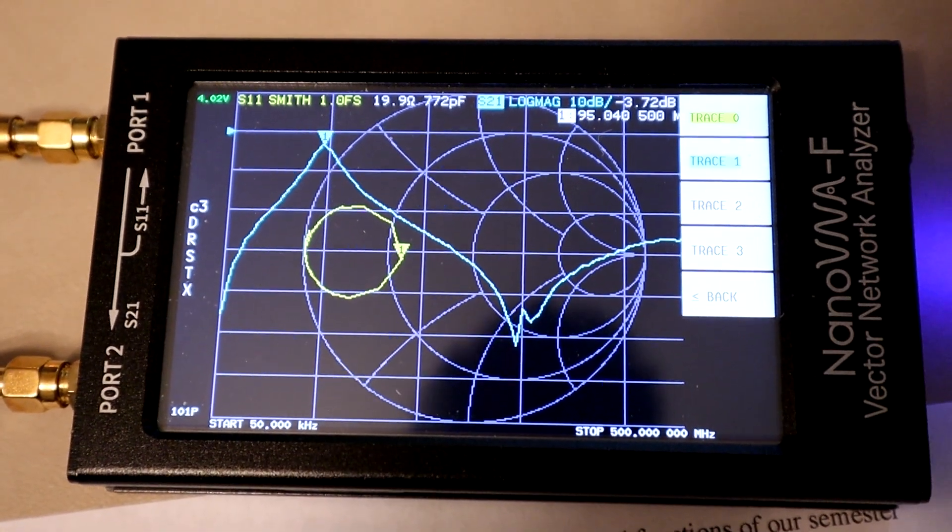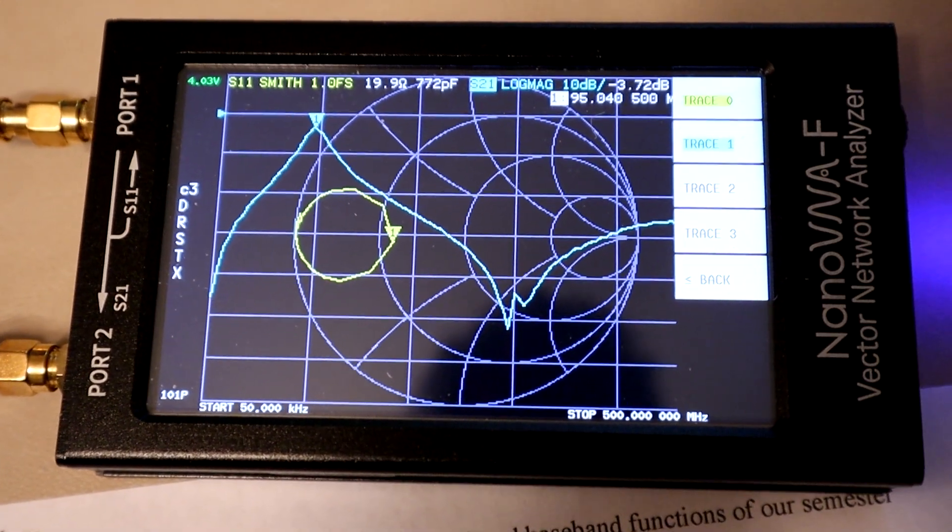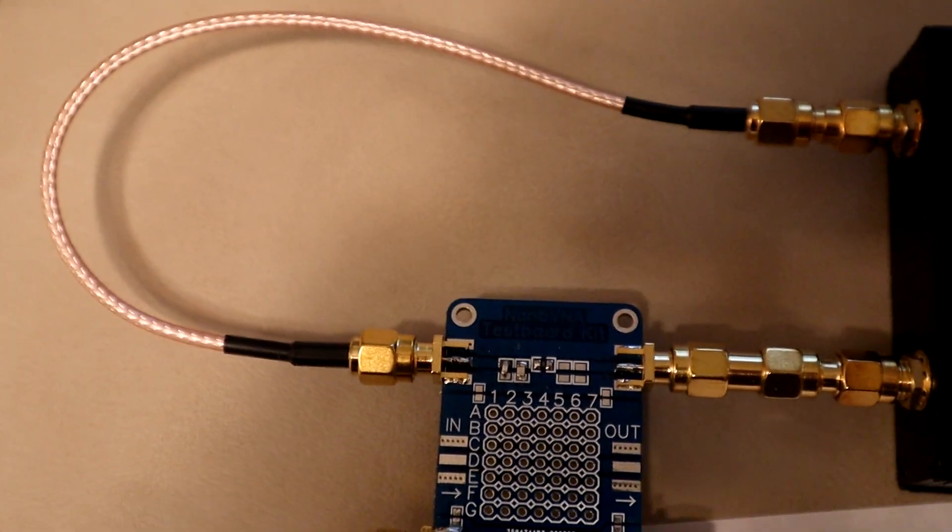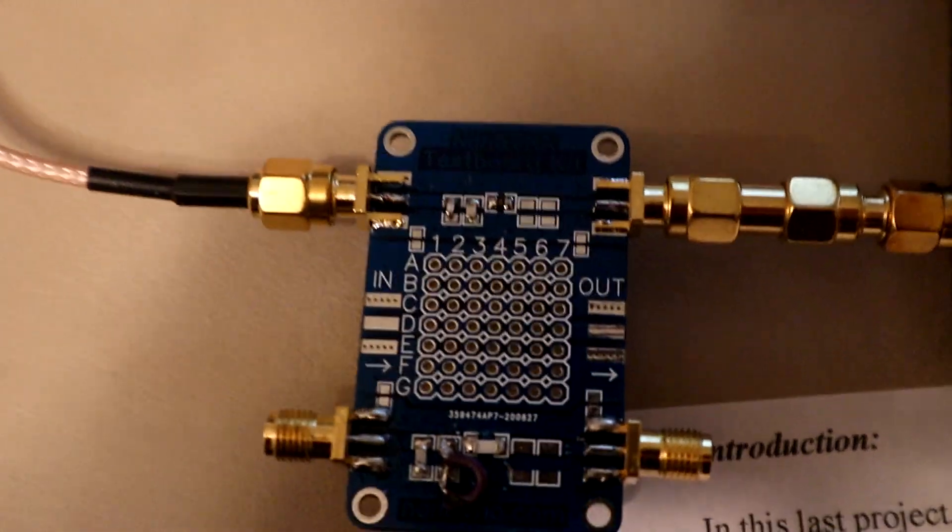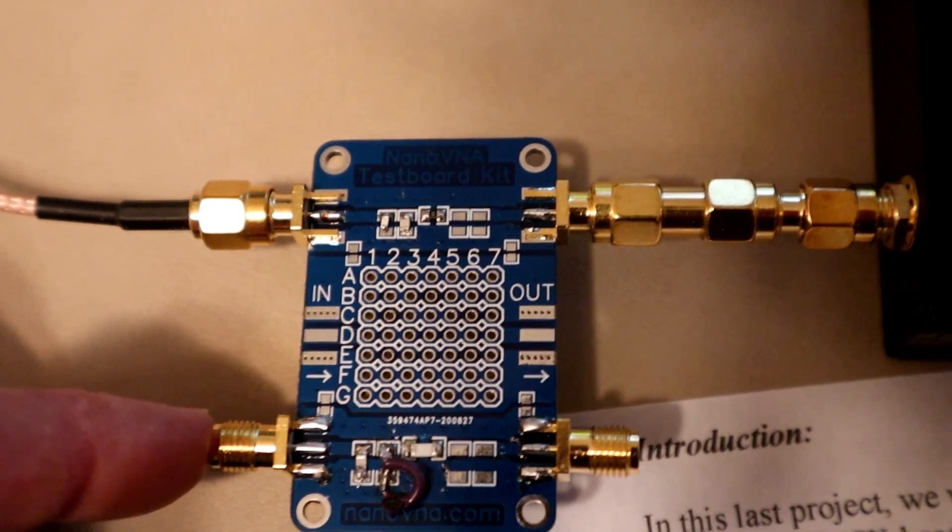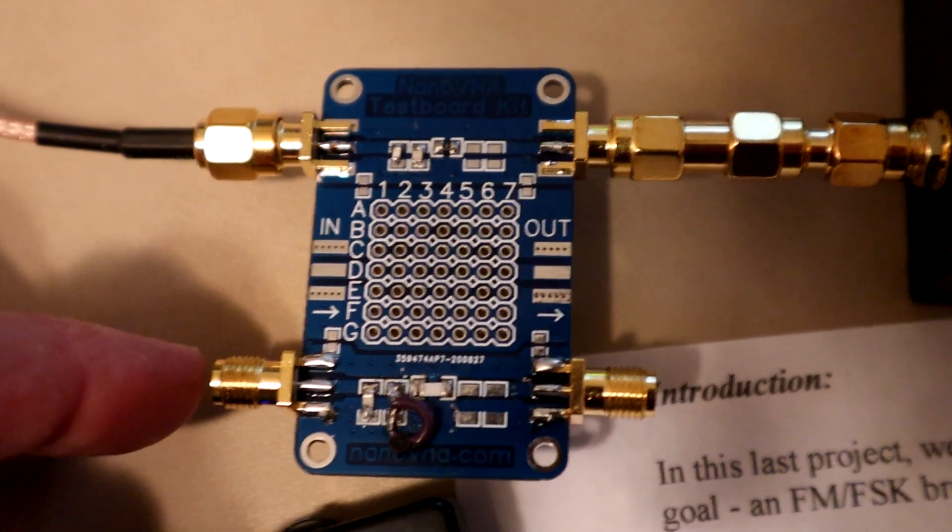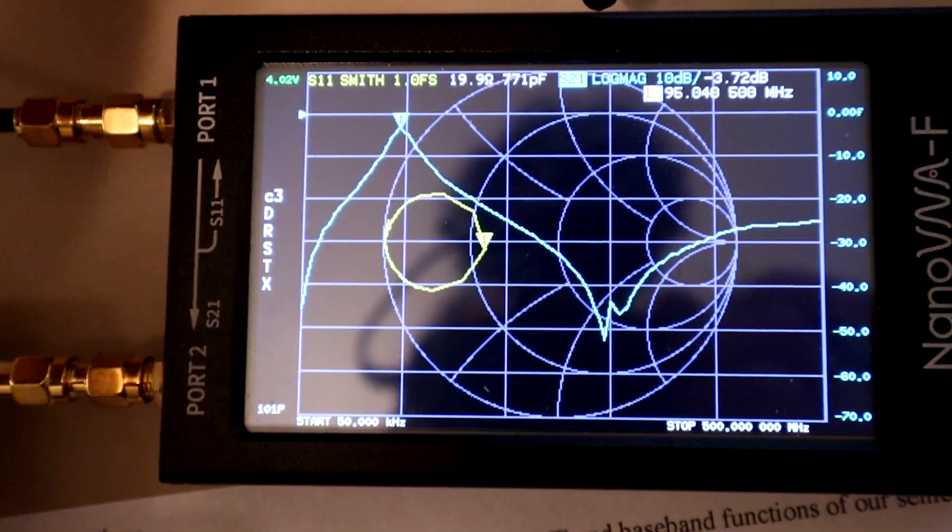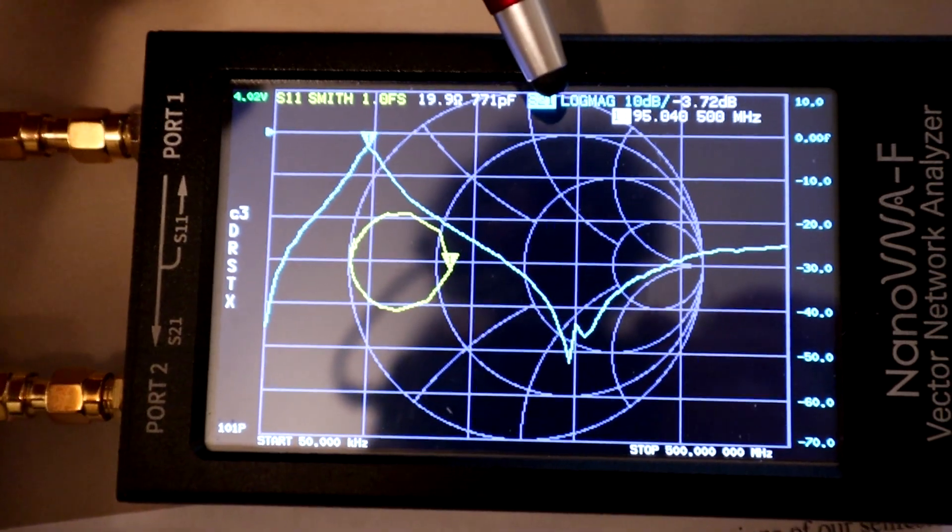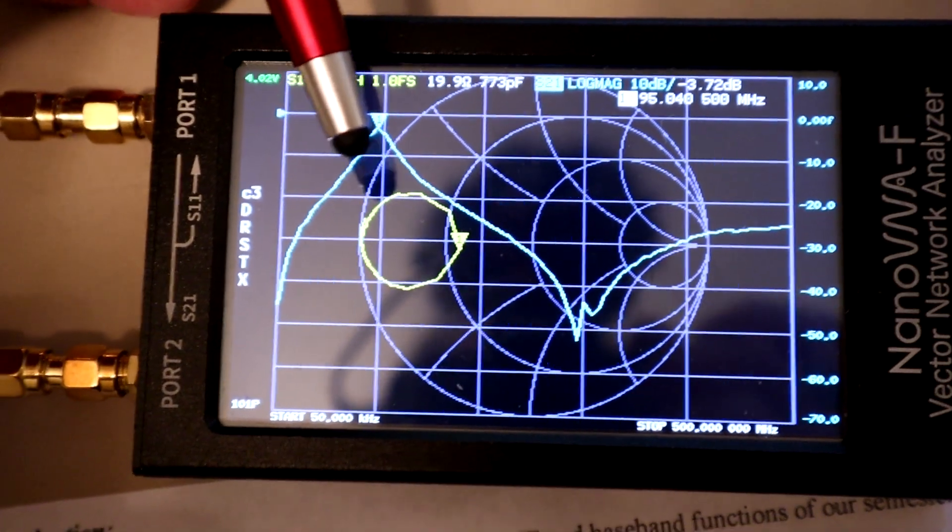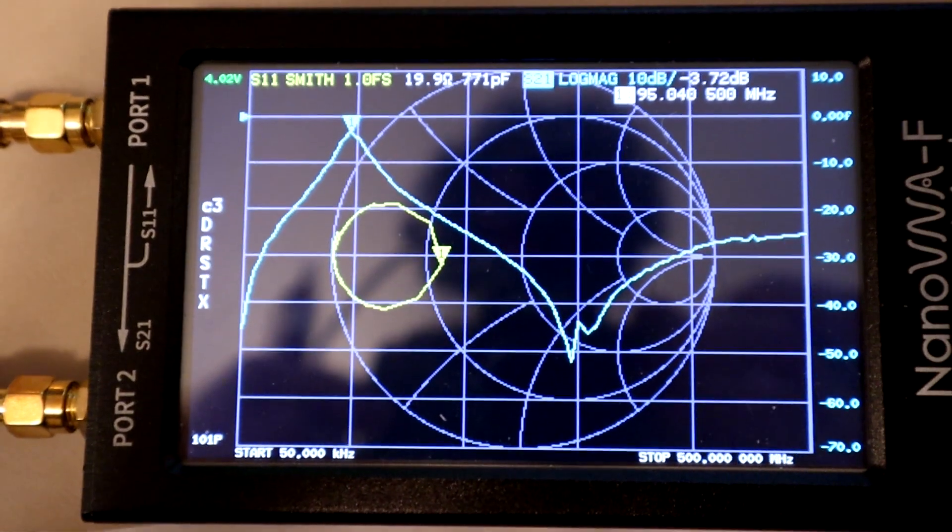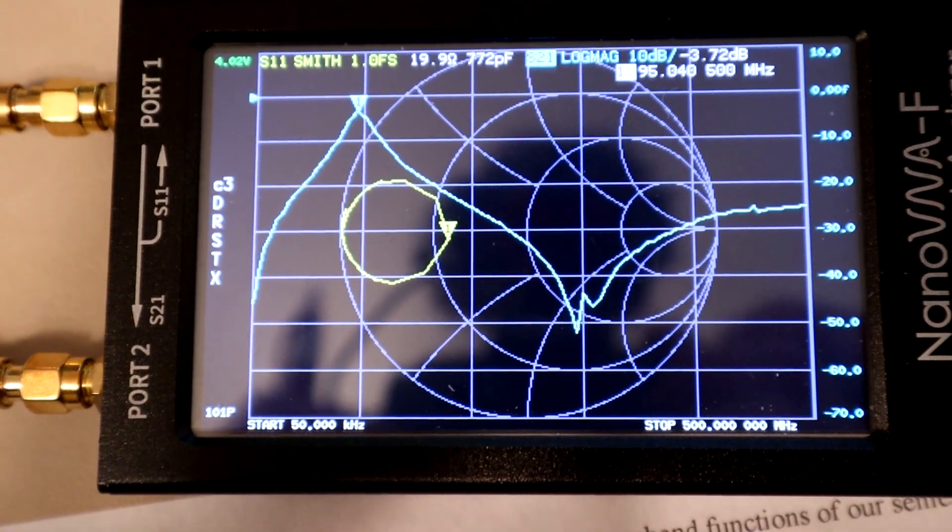Here, of course, we have the Nano VNA. And it is hooked up to do an S21 measurement and an S11 measurement. But the device under test is a little filter that I built on this test board that I was able to buy from Amazon for very inexpensive. That filter was designed using methods that we'll talk about in this video to be a bandpass shape. The blue line here is S21. And it's centered at about 95 MHz, which is close to the center of the FM broadcast band.